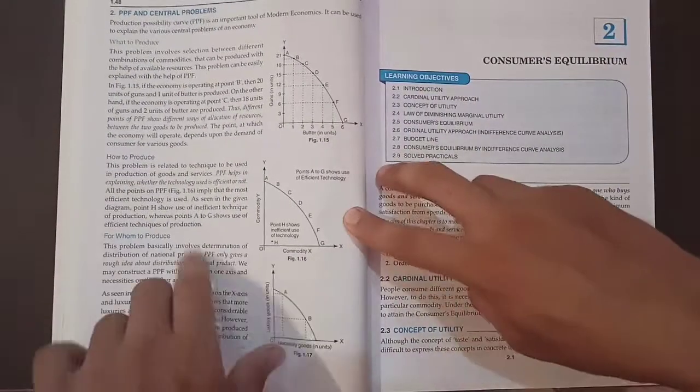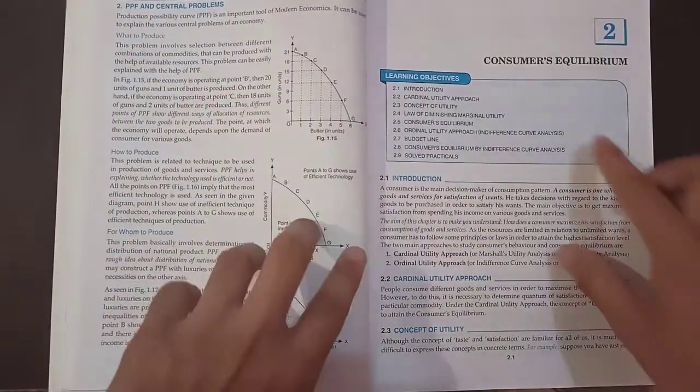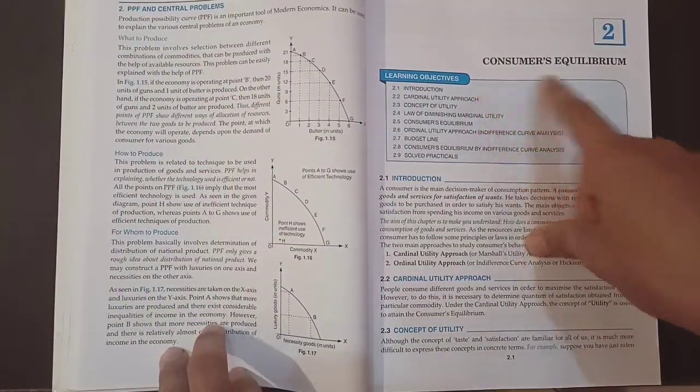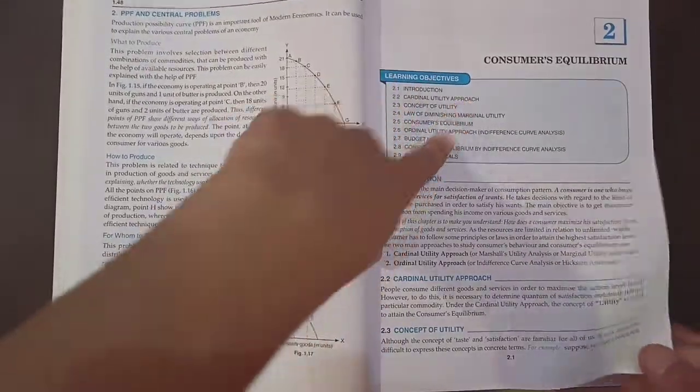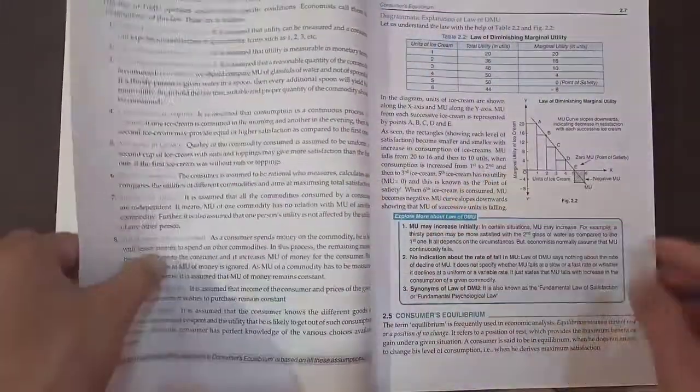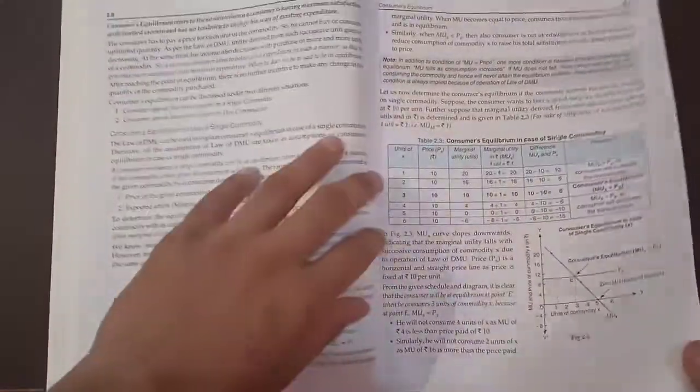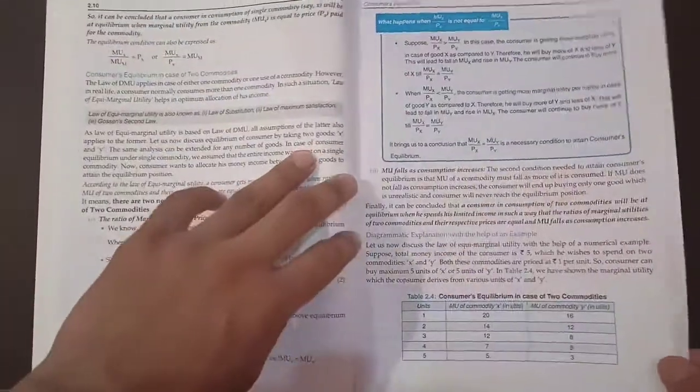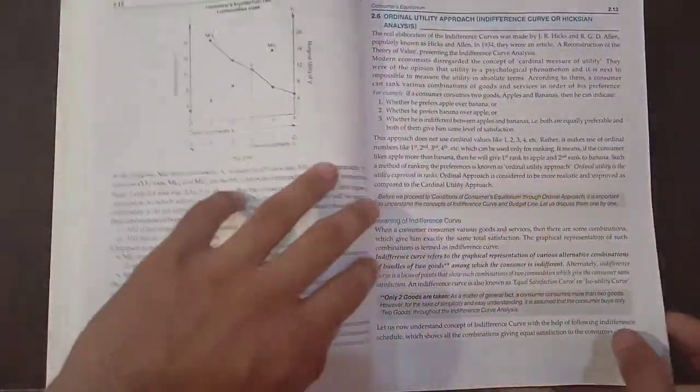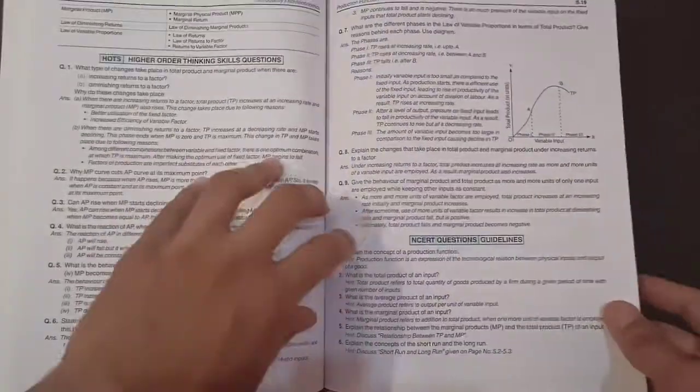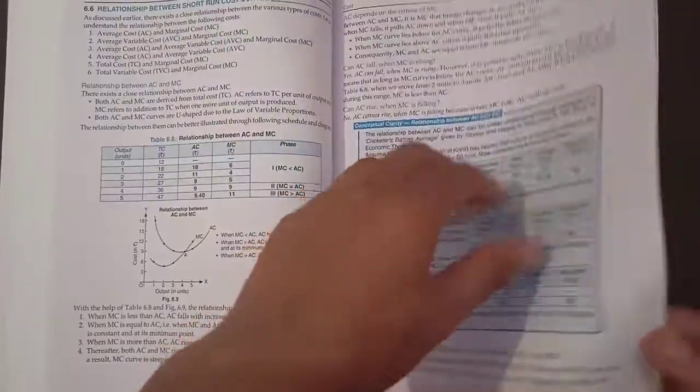Then Chapter 2, Consumer's Equilibrium. First is learning objectives, and the same pattern is going on. And the main important feature or main important good thing of this book is that the theory, the diagrams, the way the author explains - I like it. The theory of this book is very easy and anyone can understand it very easily.